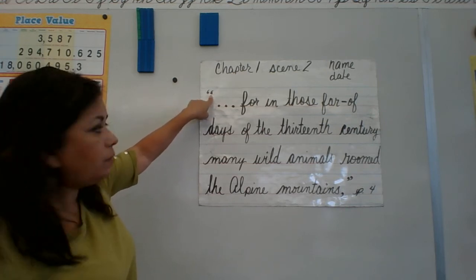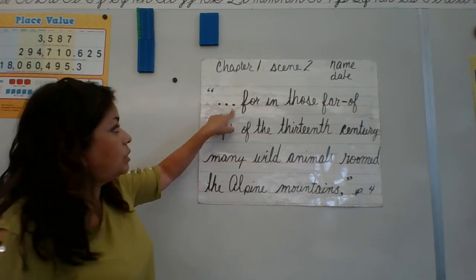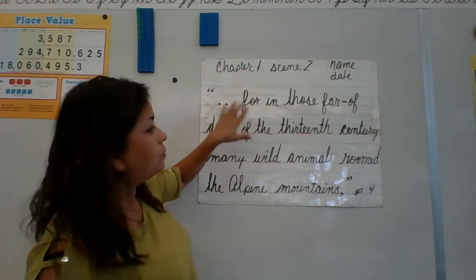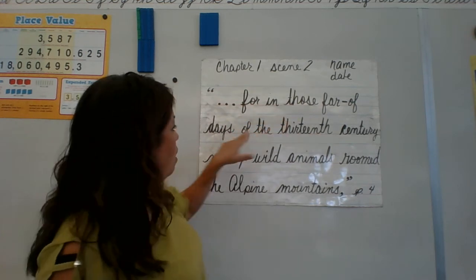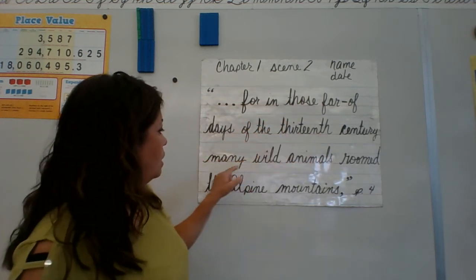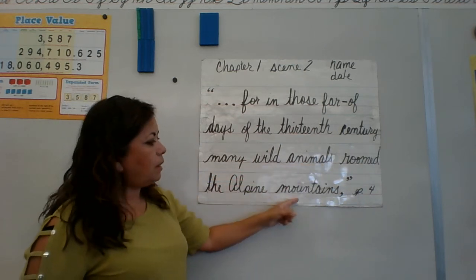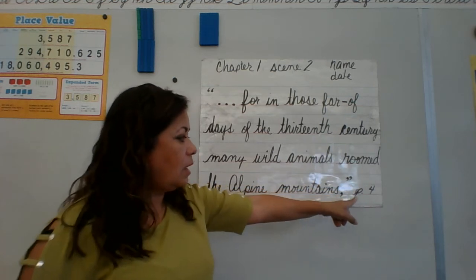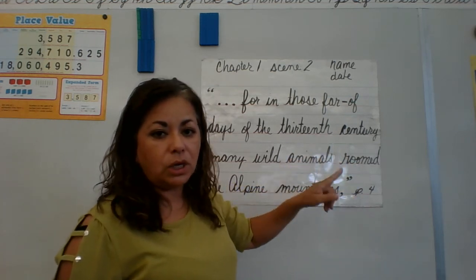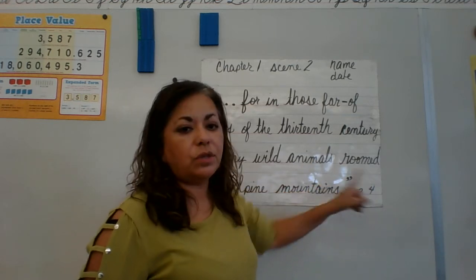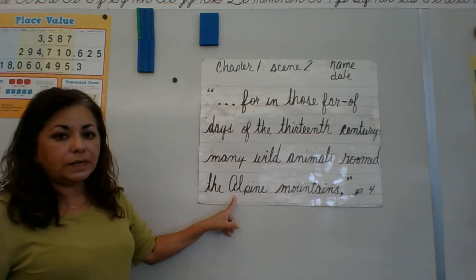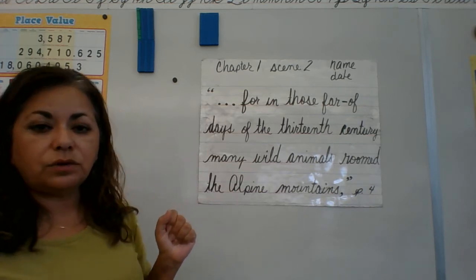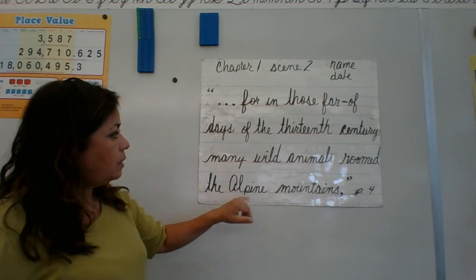Before we quote — because I took this out of the book — I put my ellipses to show I left some words out, and I don't have to use uppercase because this is not the beginning of the sentence. So: '...for in those far-off days of the 13th century, many wild animals roamed the Alpine mountains,' — close quote, then abbreviate page: P. page four. That's where I got the quote from. Notice that Alpine has an uppercase A because that's the name of a place — we always use uppercase for names of people or places.